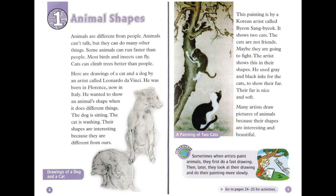Chapter 1: Animal Shapes. Animals are different from people. Animals can't talk, but they can do many other things. Some animals can run faster than people. Most birds and insects can fly. Cats can climb trees better than people. Here are drawings of a cat and a dog by an artist called Leonardo da Vinci, who was born in Florence, now in Italy. He wanted to show an animal's shape when it does different things.